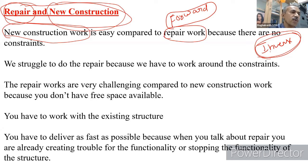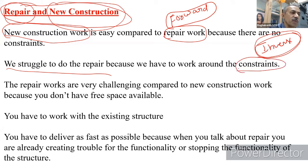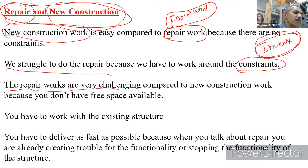In new construction there are no constraints — you can choose whatever material you like because the structure hasn't been built yet. In repair, many constraints exist since the structure is already constructed. Also, in a forward problem there is typically one solution, but in inverse problems there can be multiple solutions. That's why repair work is much more challenging than new construction.